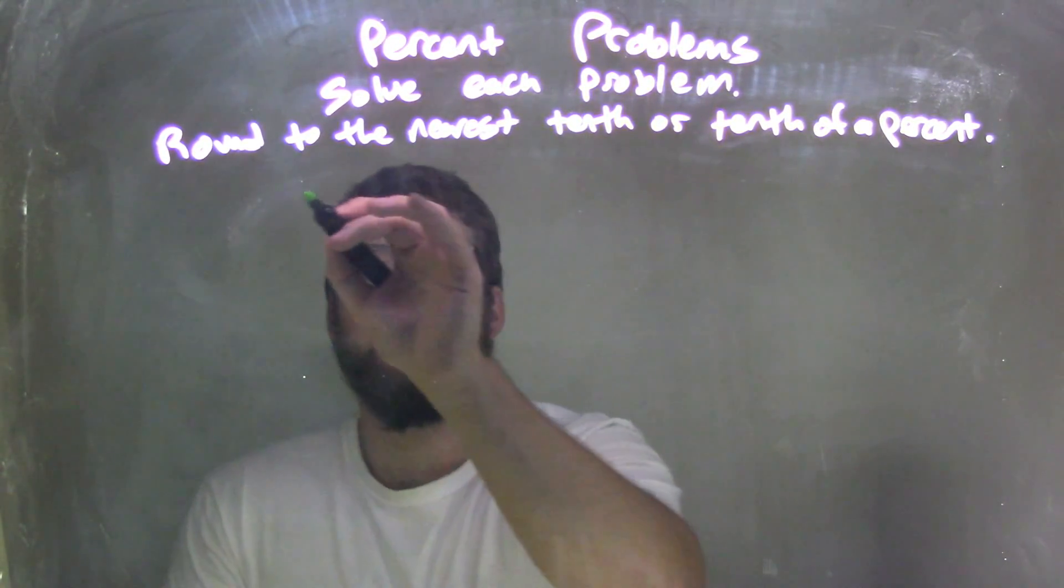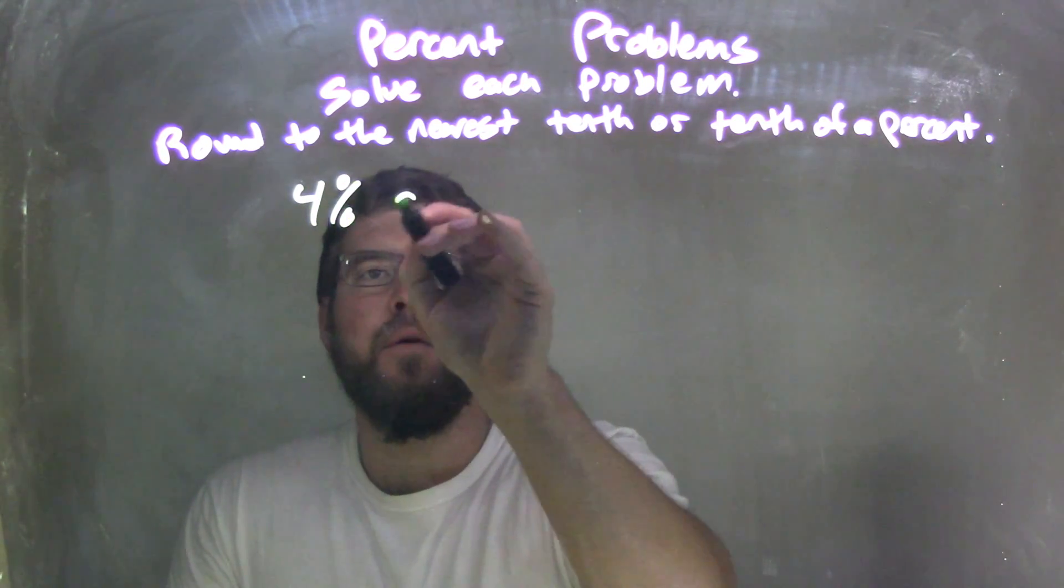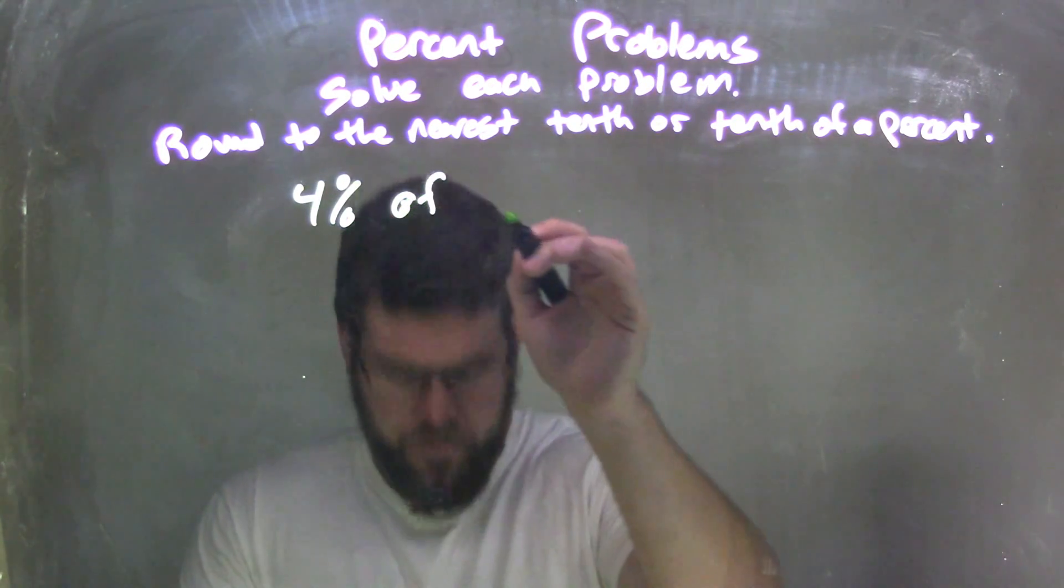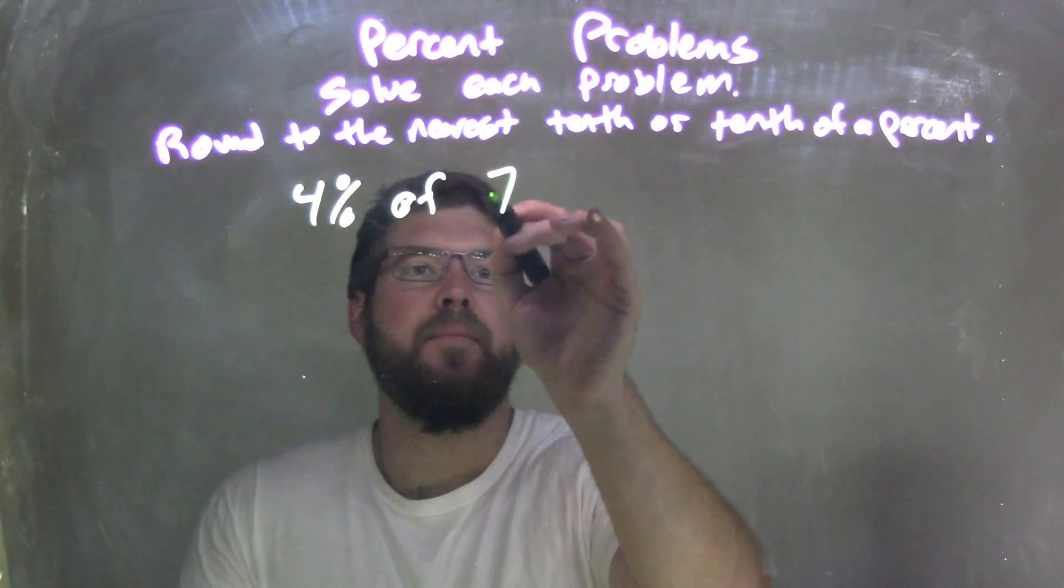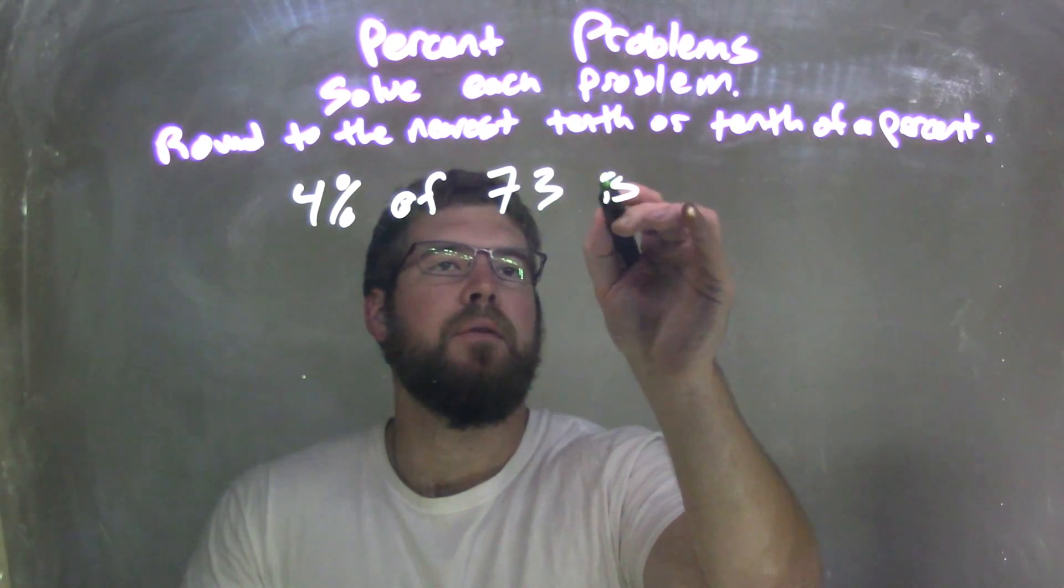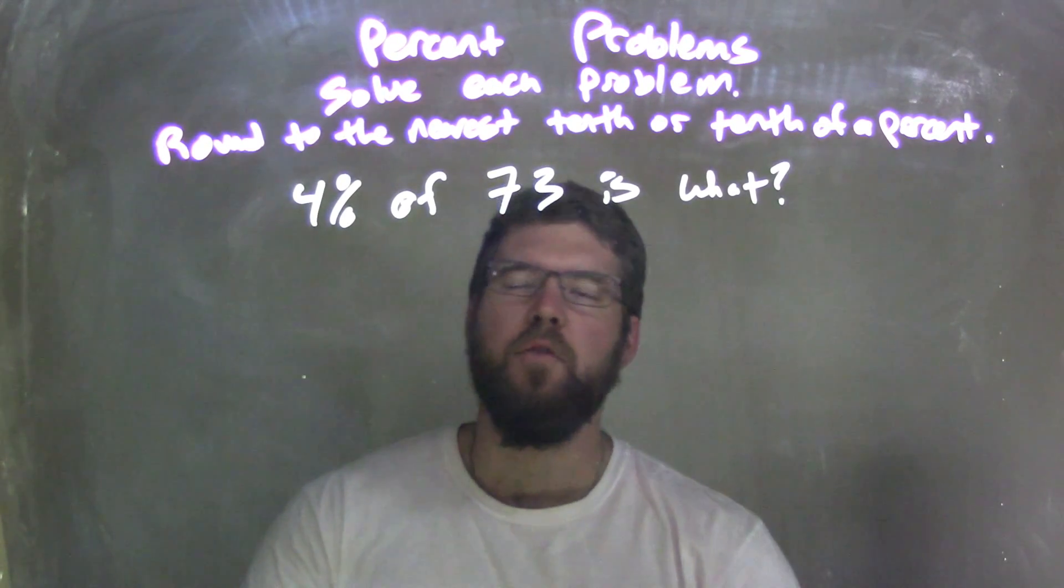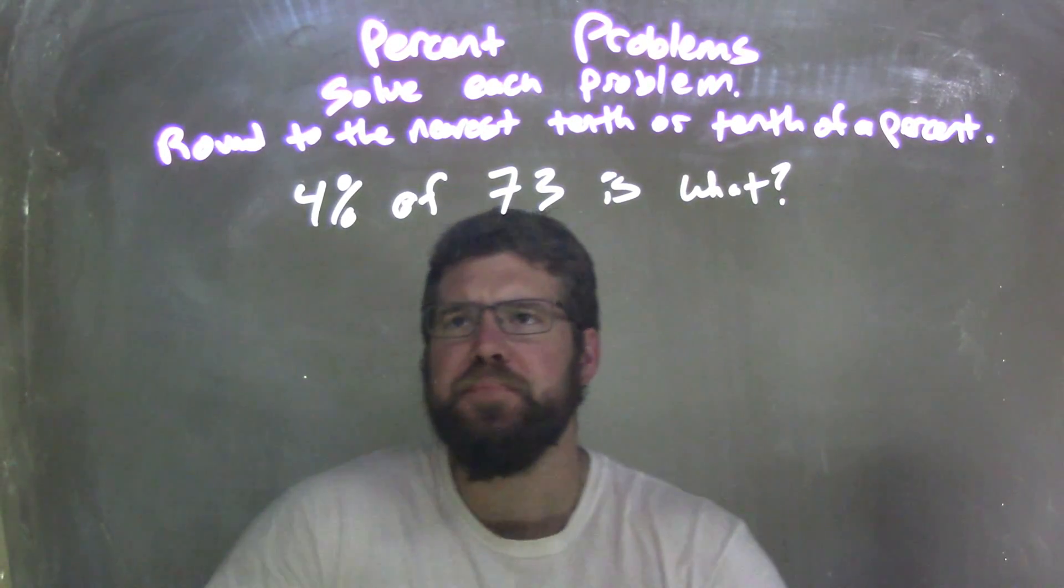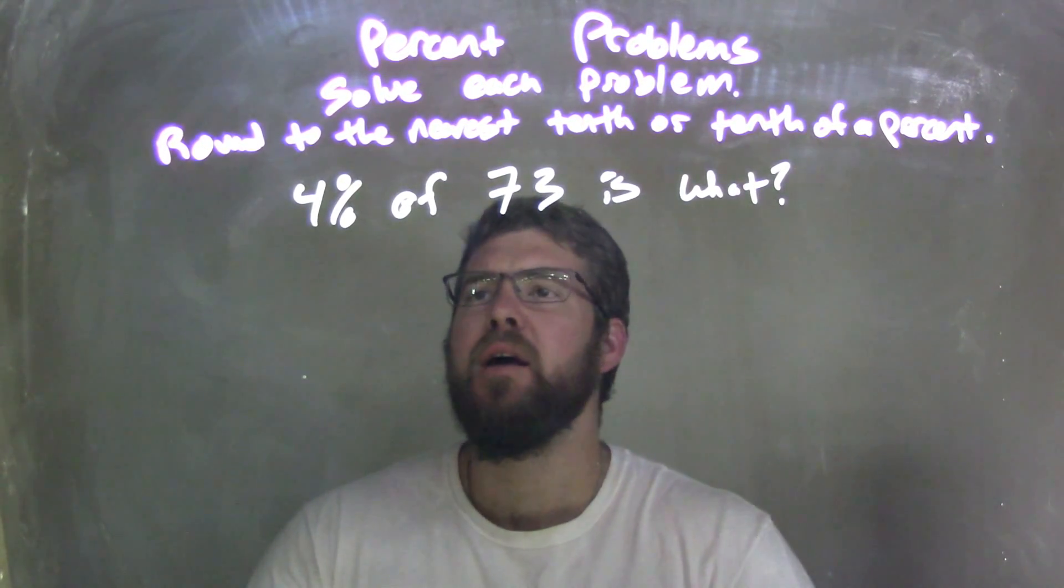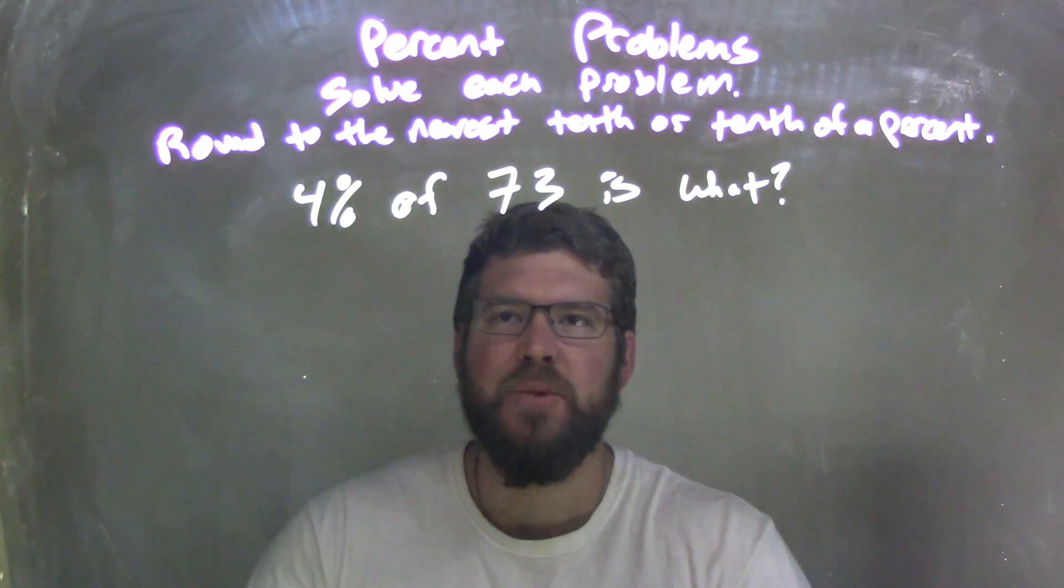So if I was given this problem: 4% of 73 is what? Well, that 4%, I'm going to convert that to a decimal.